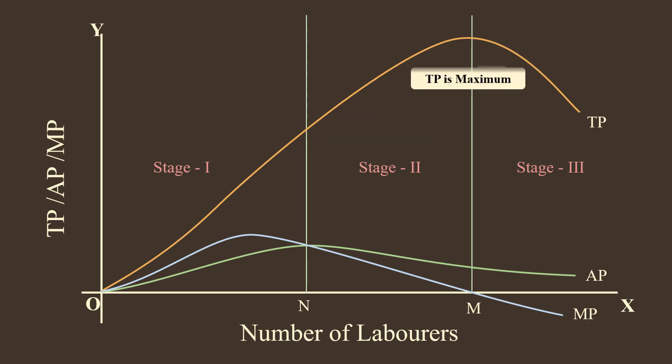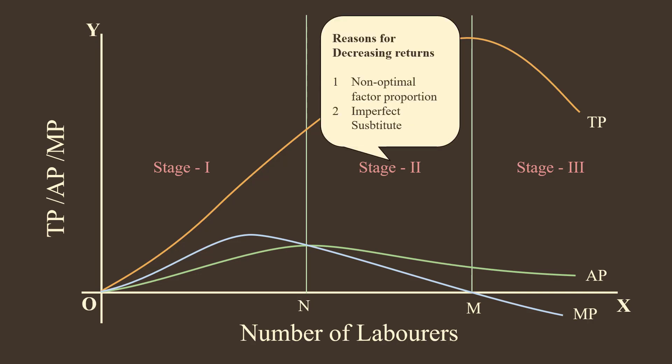4. Total product is maximum when marginal product is zero. Reasons for Decreasing Returns: 1. Non-Optimal Factor Proportion. When the proportion among the factors become non-optimal, output is not growing fast.